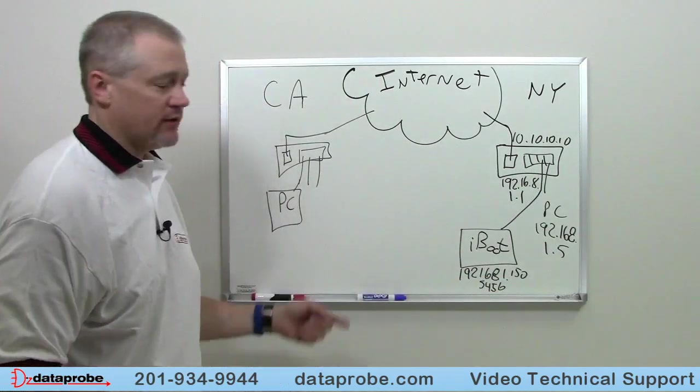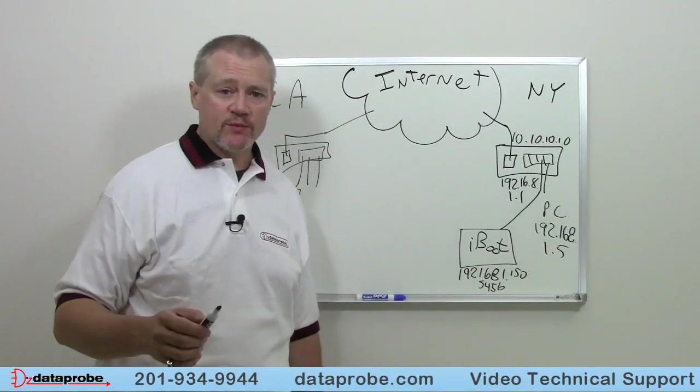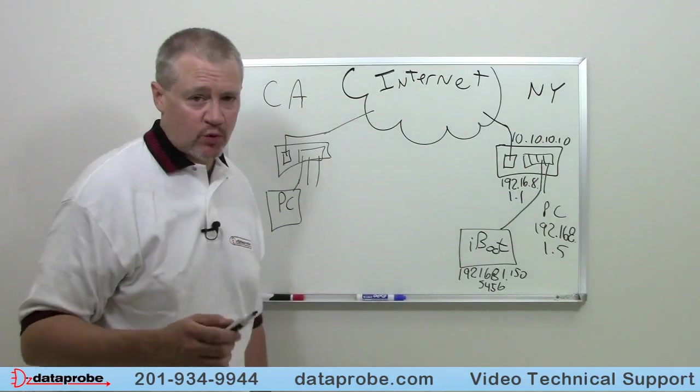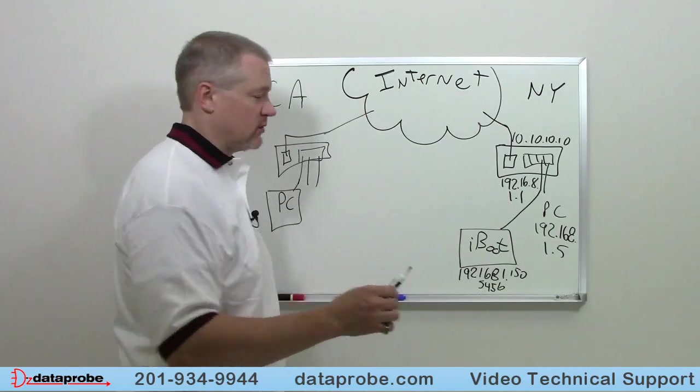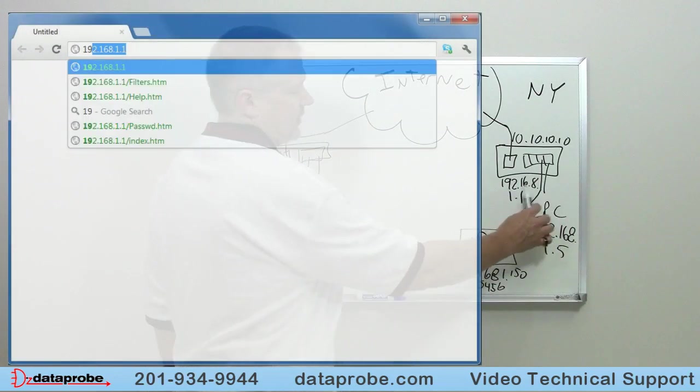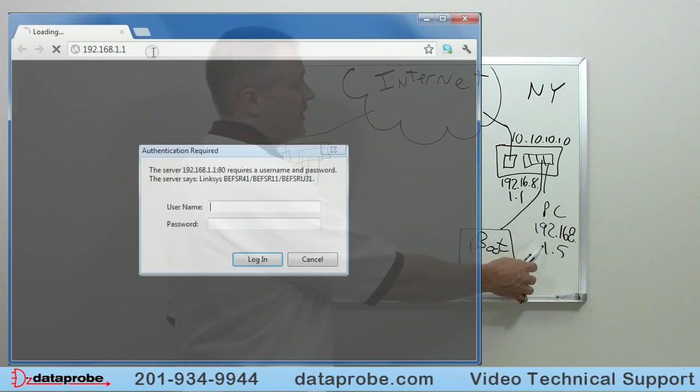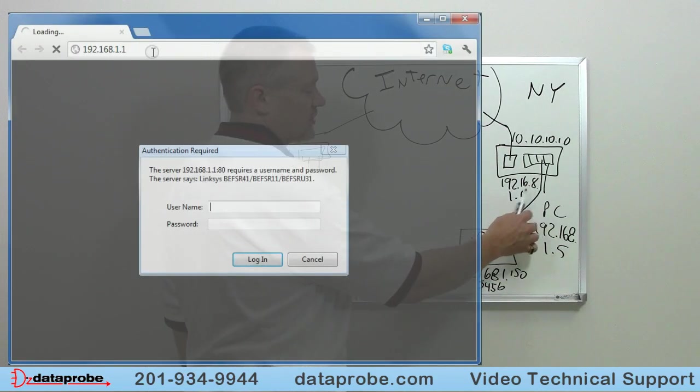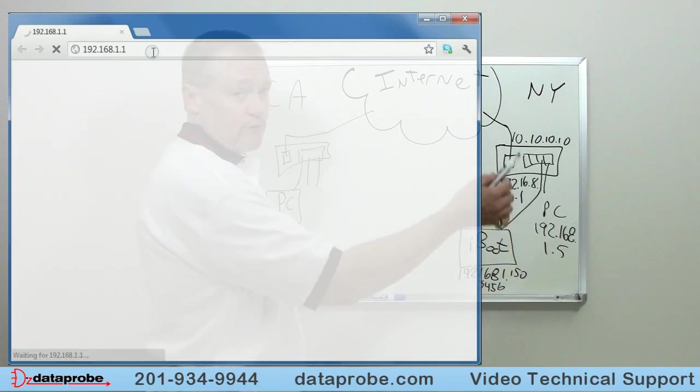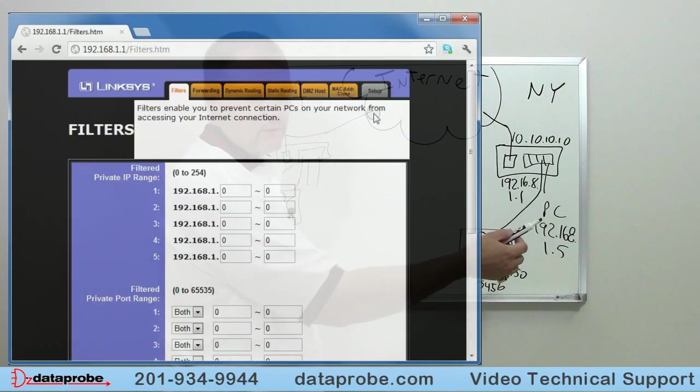We log on to our router and we are going to set up port forwarding. You will probably need to go to your router's specific website to get support on how to set up port forwarding for your specific router. But in general, you use your PC that is local to the device and log directly on to the IP address that is your gateway. So you open a web browser up and enter in the 192.168.1.1 and it will ask you for a username password. You enter that in which is the default for your router and in there you are looking for port forwarding, NAT translation, sometimes it is called gaming depending on the router.